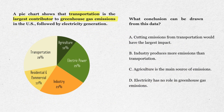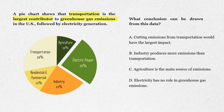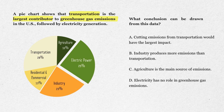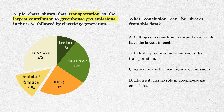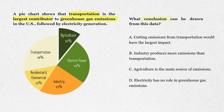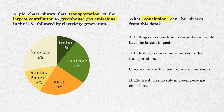The final question: the chart shows greenhouse gas emissions in the U.S. broken into categories. Transportation makes up the largest slice at 28%, followed by electric power at 25%. Then we have industry, residential and commercial, and finally agriculture. The question asks: what conclusion can be drawn from this data?